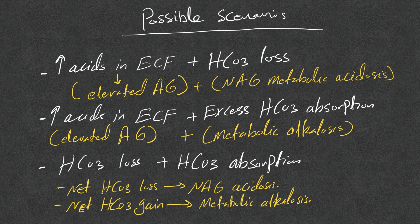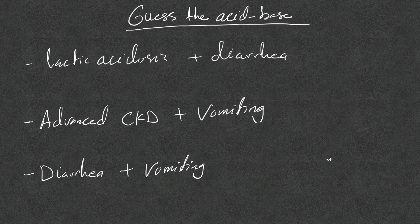You can also have conditions causing bicarb loss and bicarb absorption at the same time. We look at the net bicarb: if there is net loss, there is normal anion gap acidosis; if net gain, there is metabolic alkalosis. Normal anion gap metabolic acidosis and metabolic alkalosis cannot exist simultaneously — it's one or the other.